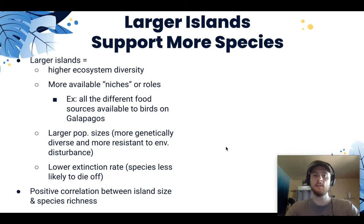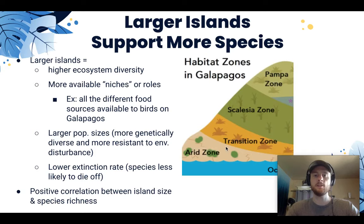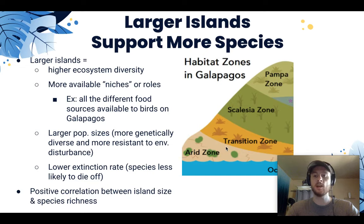Larger islands support more species for several reasons. First, larger islands have higher ecosystem diversity. As an island grows in size, it develops different micro-habitats with different food and habitat resources, supporting a wider variety of species. One species may be well-suited to an arid zone with cacti, while another is more adapted to a higher, lusher pampa zone. The larger the island, the more ecosystem diversity, and therefore more diversity of food sources. We'll see an example of this with Galapagos finch evolution at the end of today's video.